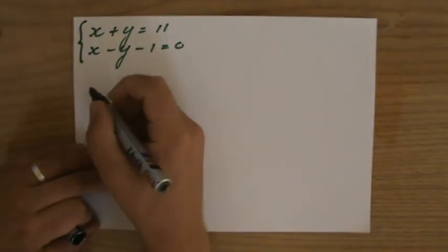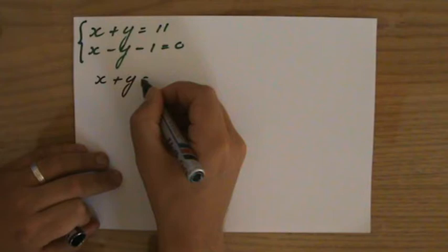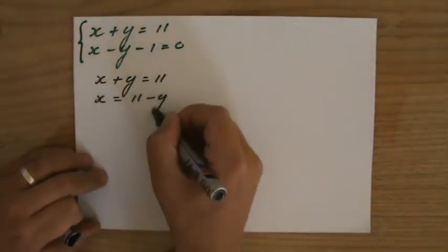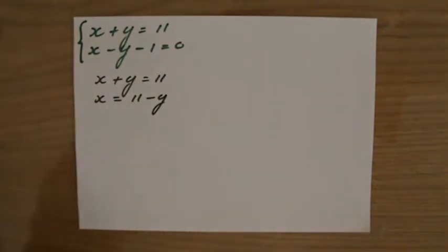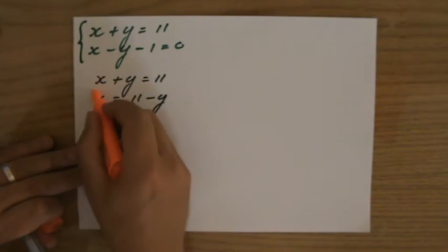So, the first equation, it says x plus y equals 11. I'm going to make x the subject, x equals 11 minus y. Now, it didn't really matter in this case if I would have made x or y the subject. It never matters.